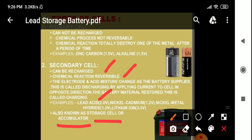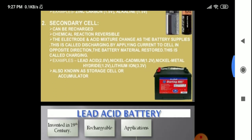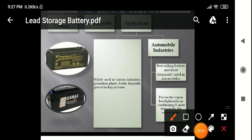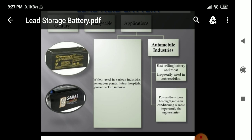Today we will discuss secondary cells in detail. The secondary cell we will focus on is the lead acid battery, also known as the lead storage battery. This is one of the most common batteries used in automobiles and inverters, and it was invented in the 19th century. It is rechargeable in nature. It is the best-selling battery, widely used in automobiles, various industries, generation plants, hotels, hospitals, and for power backup at home such as inverters. It also powers wipers, headlights, radio, air conditioning, and most importantly the engine starter.